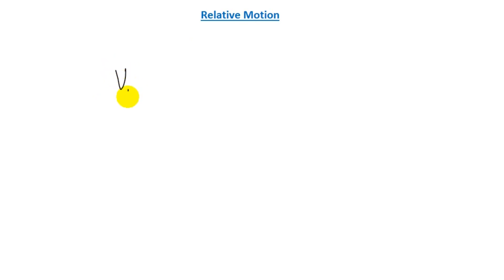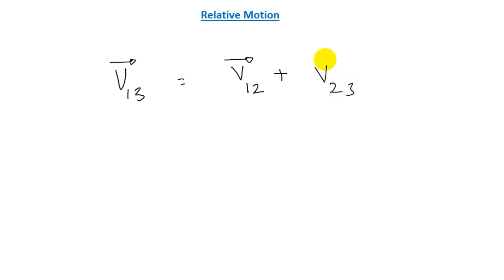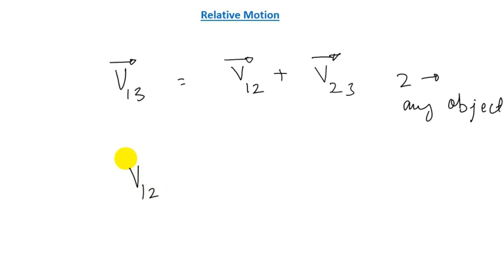The last topic is relative motion. The velocity of object 1 relative to object 3 equals the velocity of object 1 relative to object 2 plus the velocity of object 2 relative to object 3. Also, the velocity of object 1 relative to object 2 is the negative of the velocity of object 2 relative to object 1. With this, all the concepts of chapter 3 are complete, and in the next video we will discuss the questions from James S. Walker chapter 3.